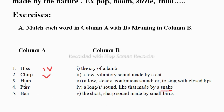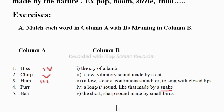The next sound is 'hmm' — it sounds like singing with closed lips. It's a continuous or low steady sound; when we close our lips, the sound that comes out is called 'hmm.' And 'purr' is nothing but a sound made by a cat. And the last one, the 'baa' sound, which is made by a small lamb.